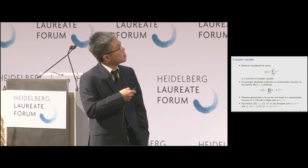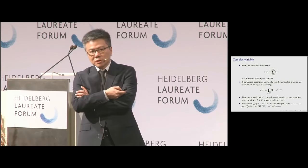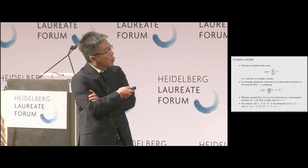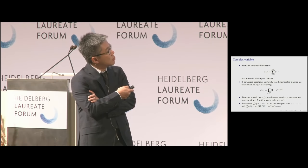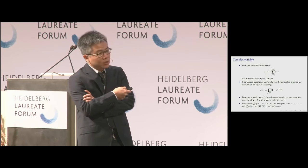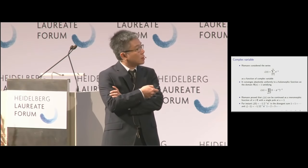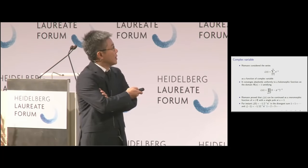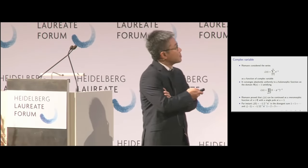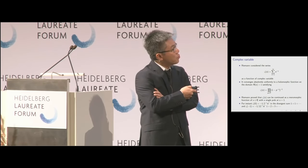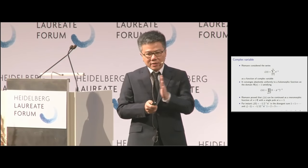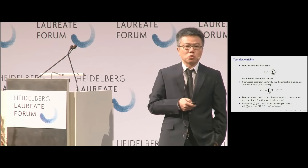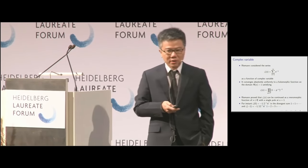Moreover, the Euler argument applies: the zeta function on this domain has a factorization as a product of factors indexed by prime numbers. So this argument of Euler's extends to the complex domain. What Riemann proved is that this function can be extended to the whole complex plane, except for a single pole at s equal to 1. In this way, he can make sense of these funny identities — like when you put s equal to 0.